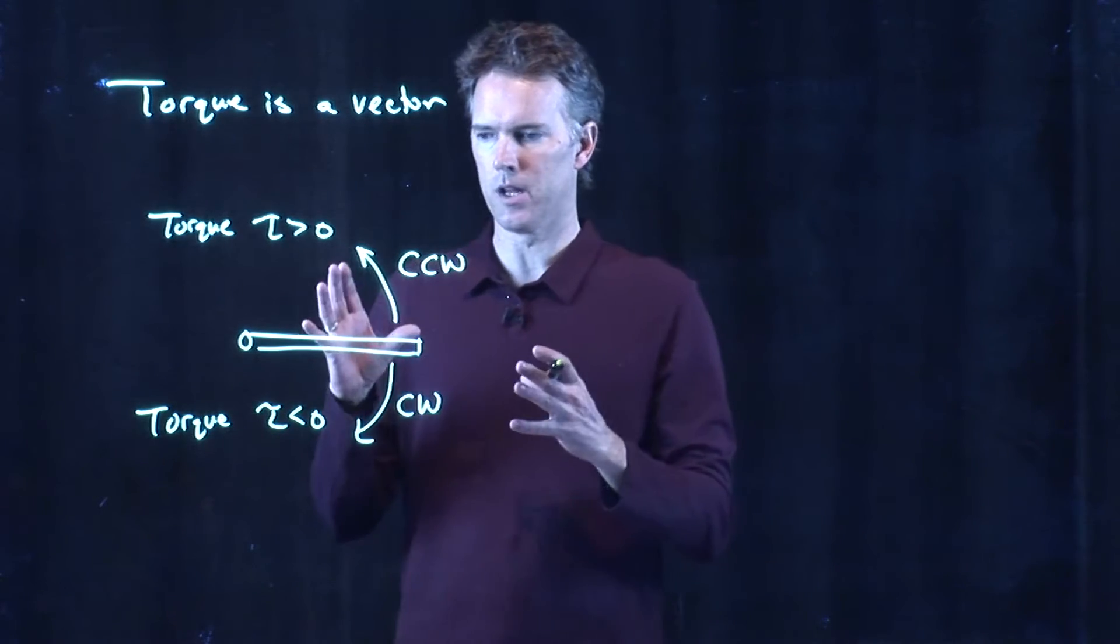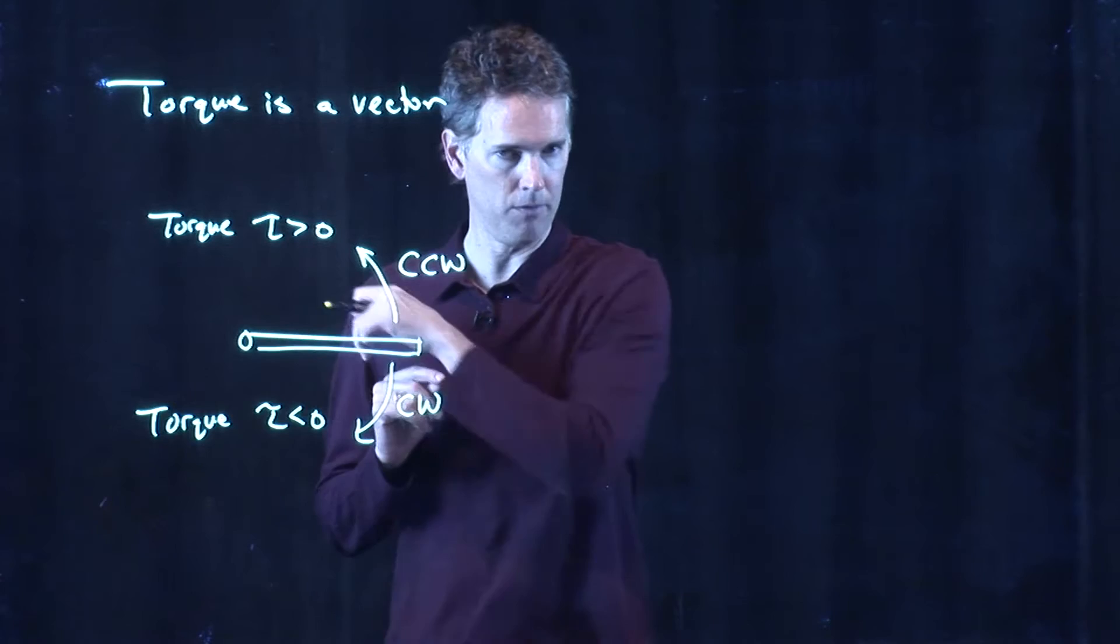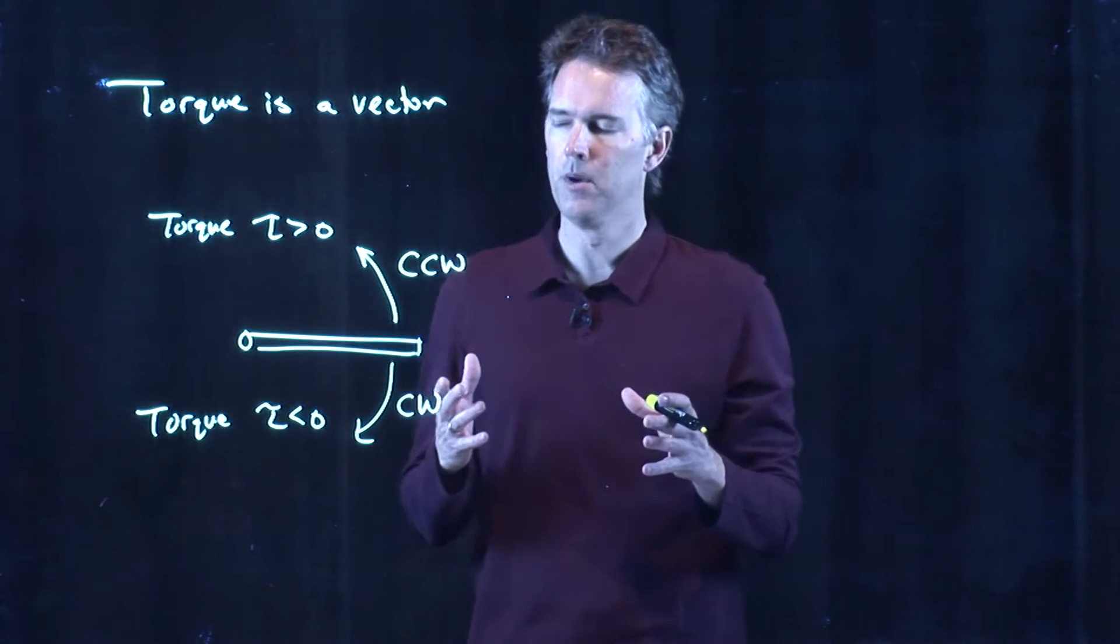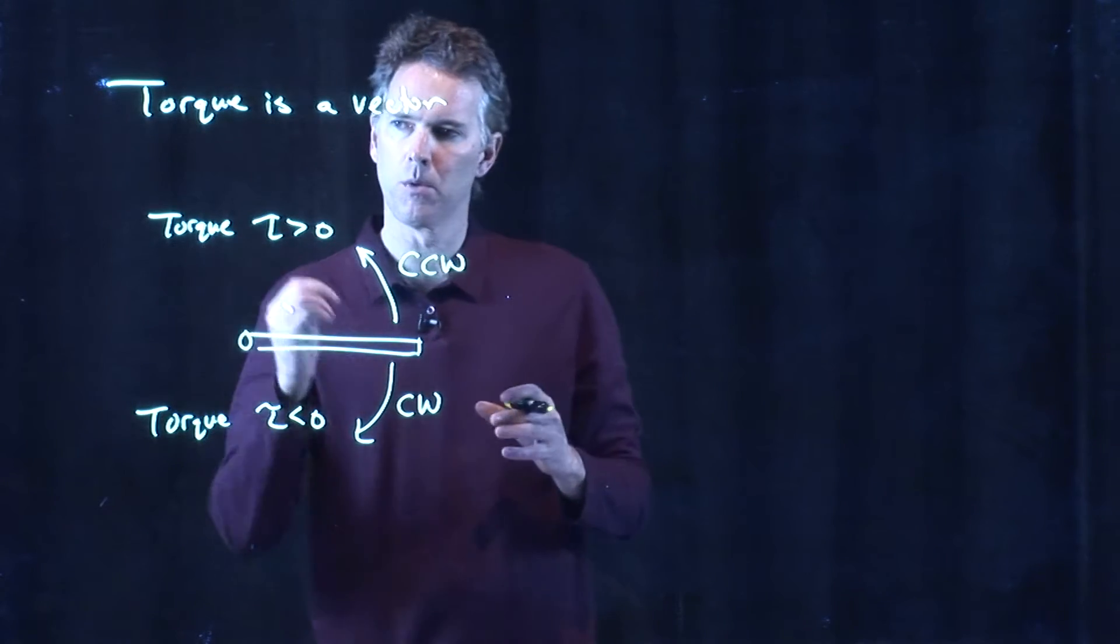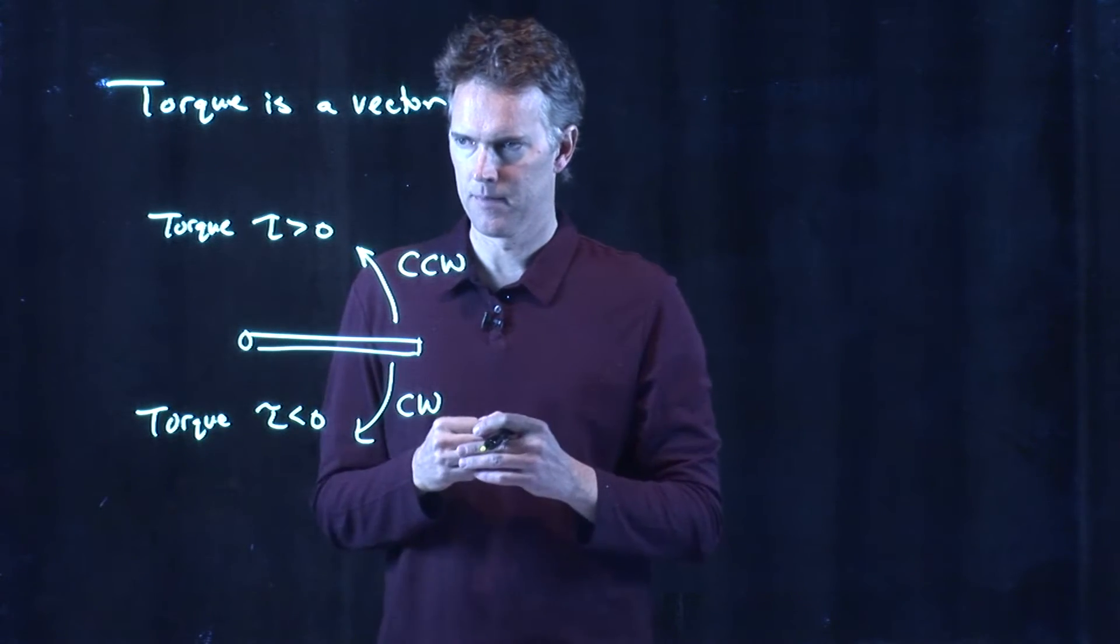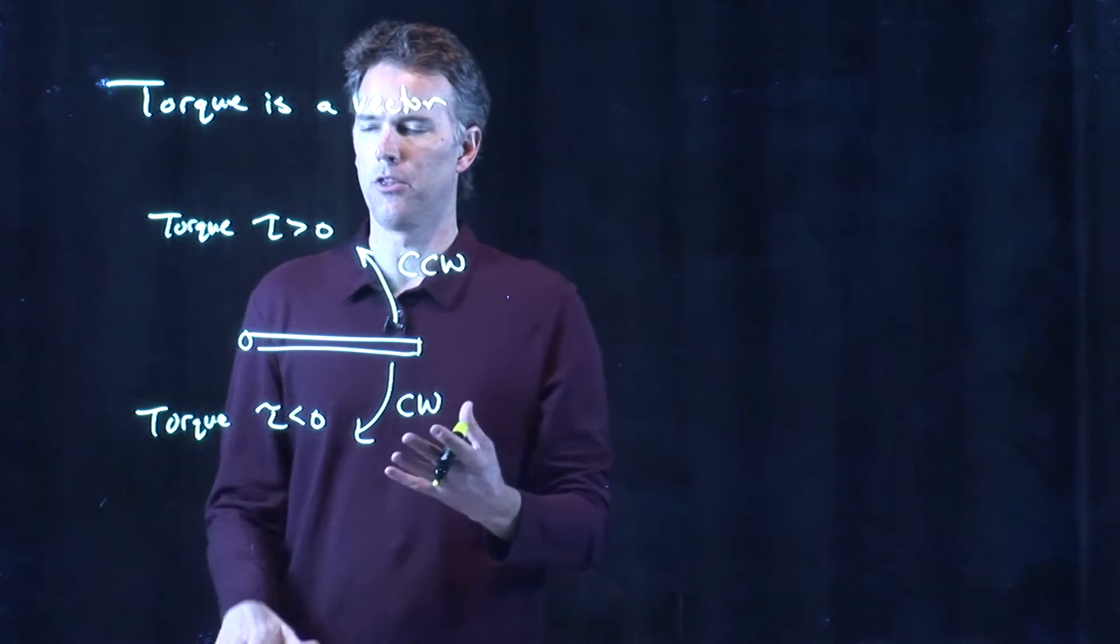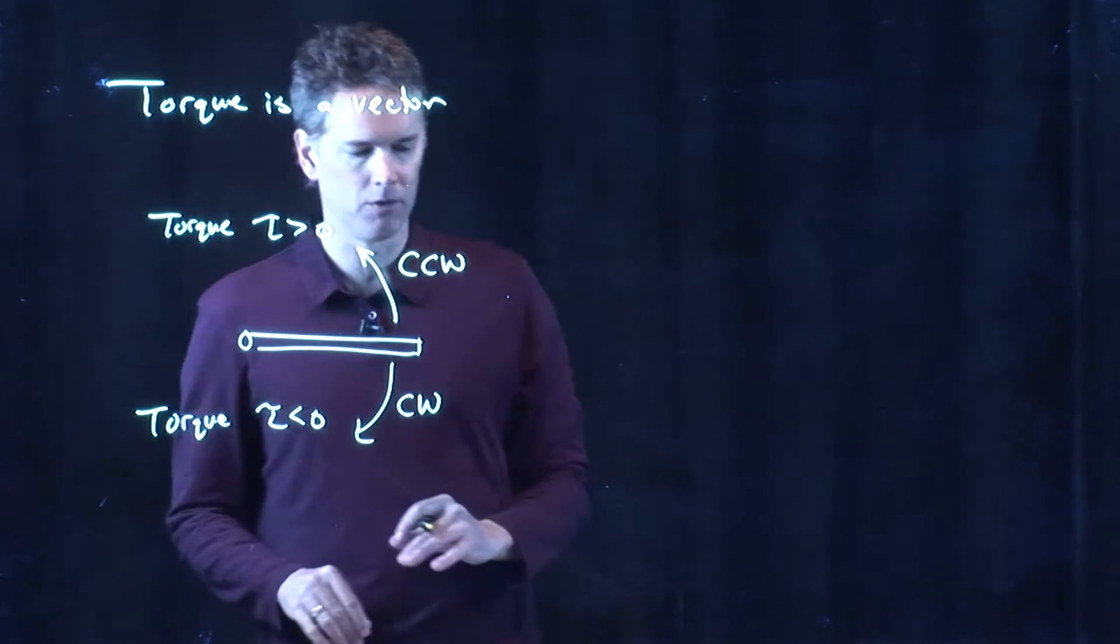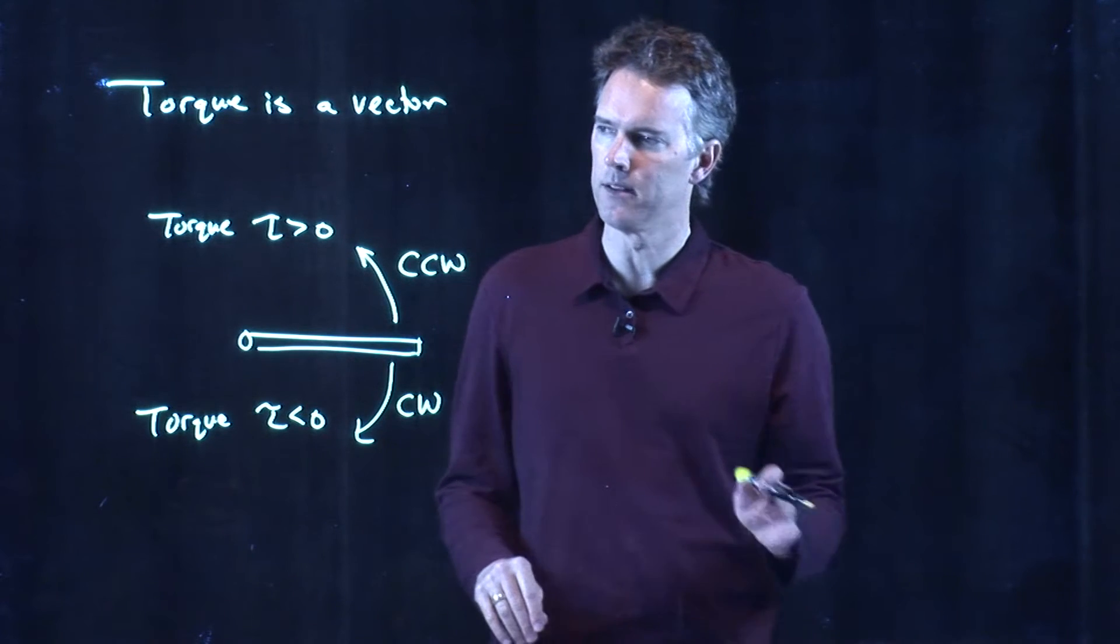In three dimensions, we know that torque is into or out of the board. And once you draw a Cartesian coordinate system, you'll see that if I have x crossing with y, I get z. So that's how it's going to relate to the third dimension. But just thinking in two dimensions, this is a perfectly adequate way to think about it.